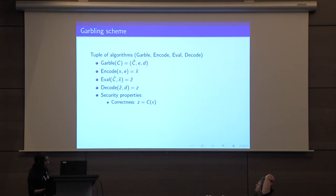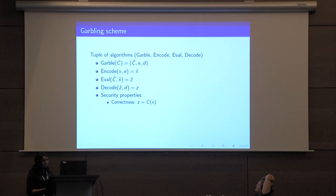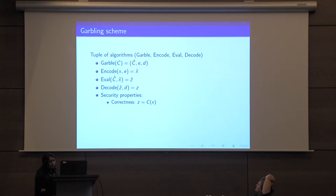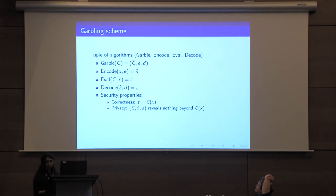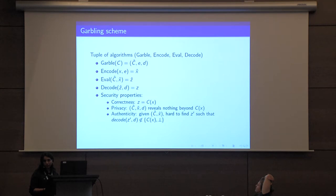Let us quickly recall what a garbling scheme is. We have a tuple of algorithms: Garble, Encode, Eval, and Decode. Garble is a randomized algorithm that takes a circuit and outputs a garbled circuit along with encoding and decoding information. Encode takes the plaintext input and encoding information and outputs a garbled input. Eval takes the garbled circuit and garbled input and gives a garbled output. Decode takes a garbled output and decoding information and gives the plain circuit output. We want correctness — decoding the garbled output should equal C(x) — and for security we want privacy and authenticity.